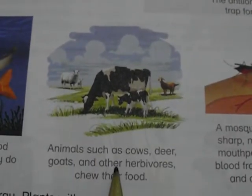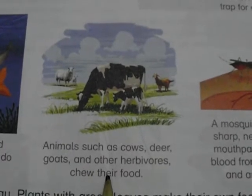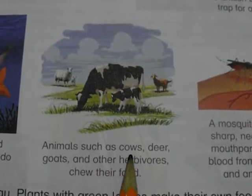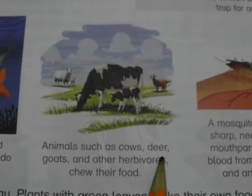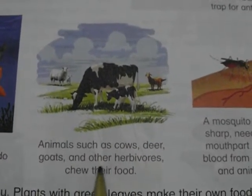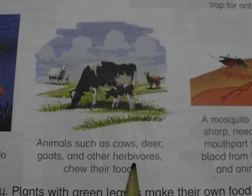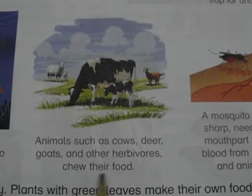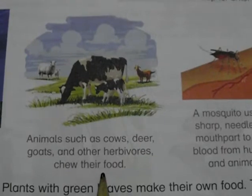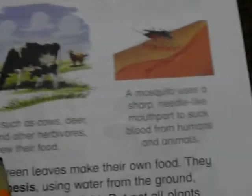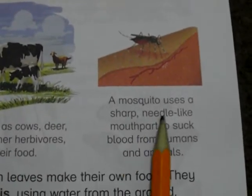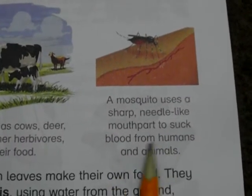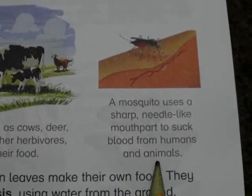Animals such as cows, deer, goats and other herbivores chew their food. A mosquito uses a sharp needle-like mouth part to suck blood from humans and other animals.